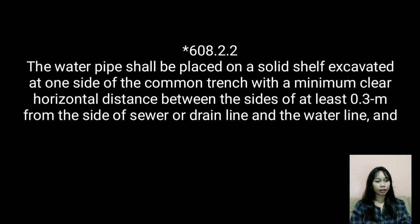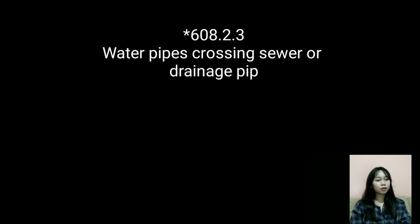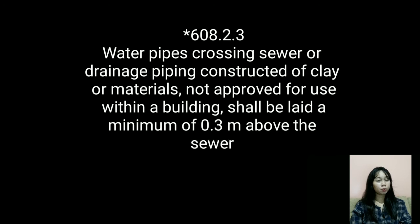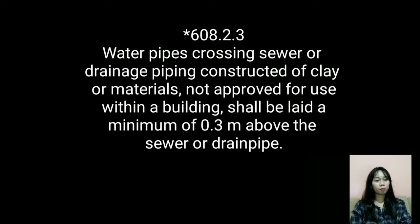Section 608.2.2: The water pipe shall be placed on a solid shelf excavated at one side of the common trench with a clear horizontal distance of at least 0.3 meter from the side of the sewer or drain line to the water line. Section 608.2.3: Water pipe crossing sewer or drainage piping constructed of clay or materials not approved for use within a building shall be laid a minimum of 0.3 meter above the sewer or drain pipe.